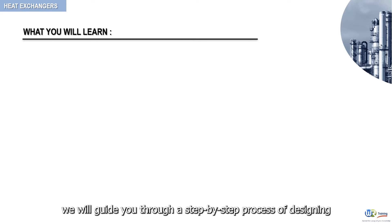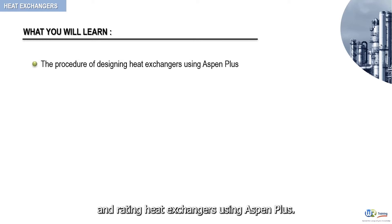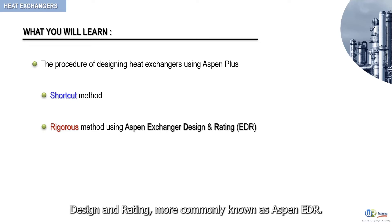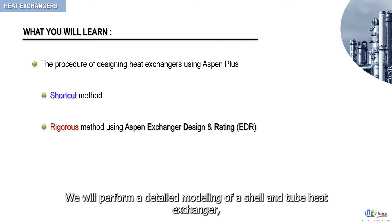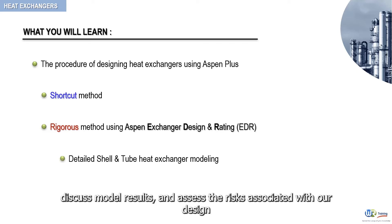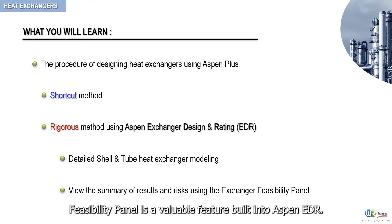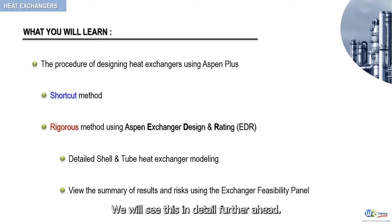In this section, we will guide you through a step-by-step process of designing and rating heat exchangers using Aspen Plus. We will show you both the shortcut method and the rigorous method using Aspen Exchanger Design and Rating, more commonly known as Aspen EDR. We will perform a detailed modeling of a shell and tube heat exchanger, discuss model results, and assess the risks associated with our design using the Exchanger Feasibility Panel, which is a valuable feature built into Aspen EDR. We will see this in detail further ahead.